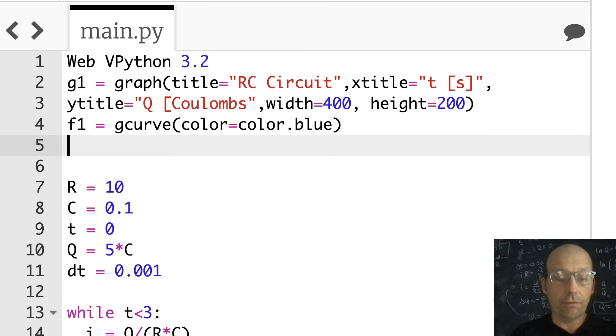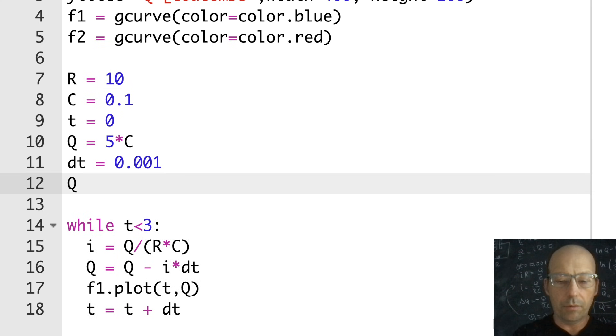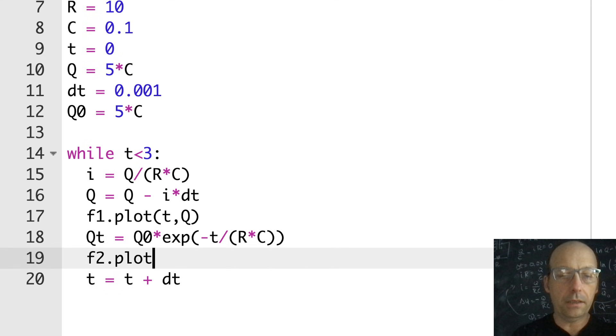F2 equals G curve. Color is color dot red. And then down here, I'm going to calculate the theoretical. So I do need something. I'm going to say Q0. I'm going to need that in my calculation. It's five times C. It's the same thing. I don't want to set it equal to it. And then down here, I'm going to calculate QQT, the theoretical charge. And this is going to be equal to Q0 times exponent negative T divided by R times C. That's what we said before. Now I'm going to plot that. F2 dot plot T QT. Let's see what happens.